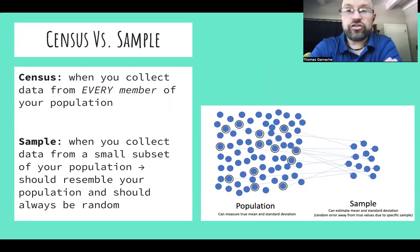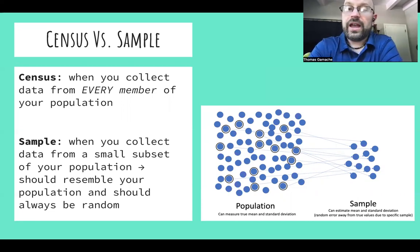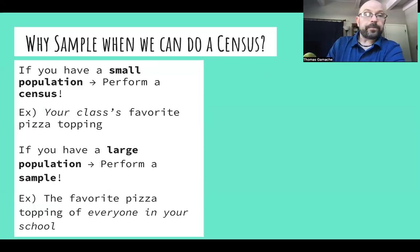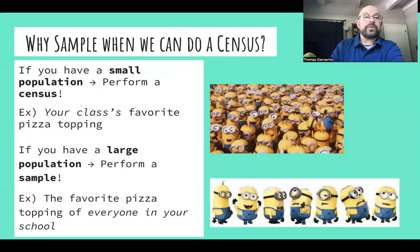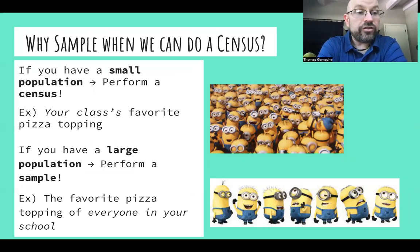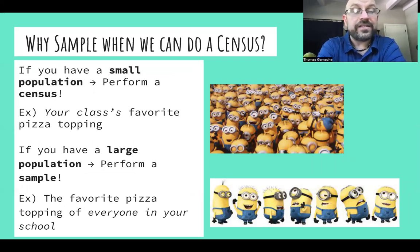For right now, it's just important to note that you're looking at a much smaller, randomly selected group from within a population to represent your sample. Why do we sample instead of a census? If you have a small population, you should always perform a census. An example of this would be asking what's your class's favorite pizza topping.